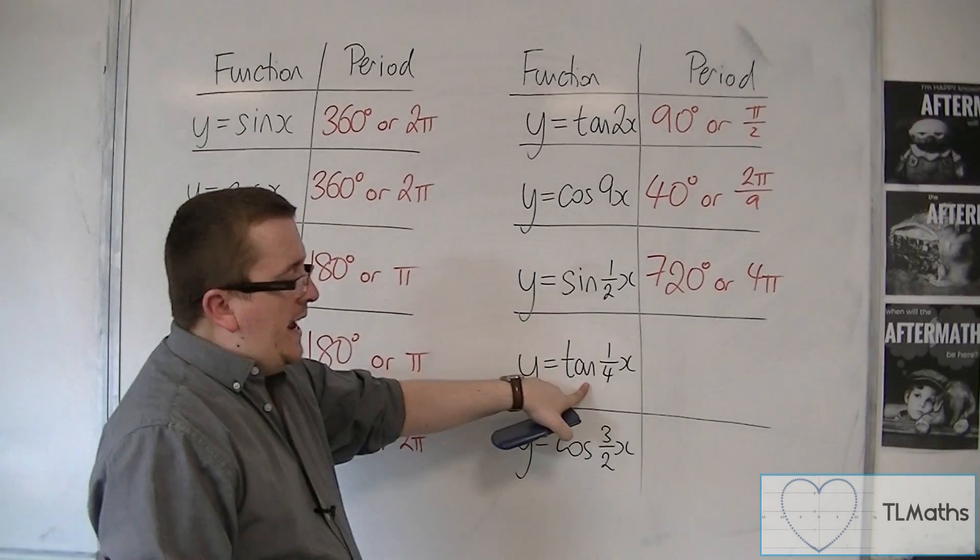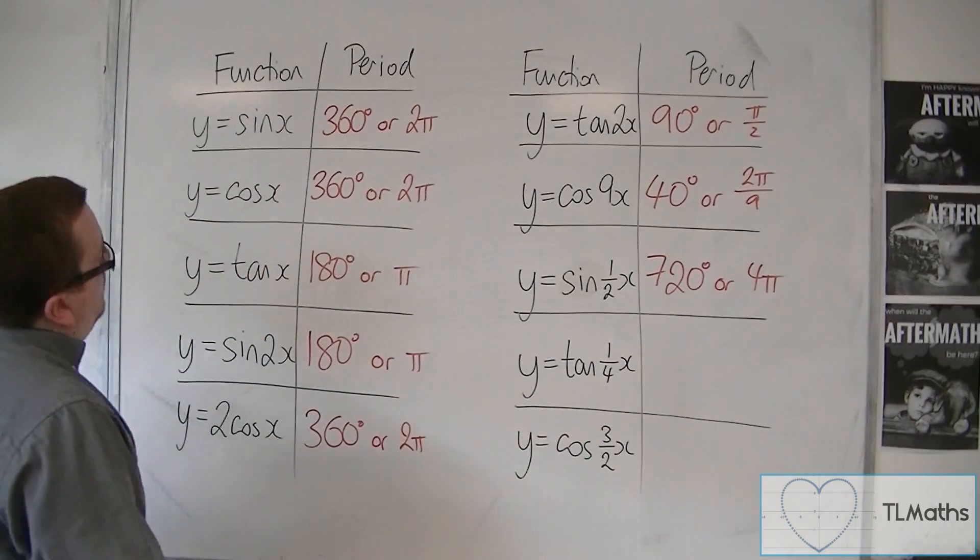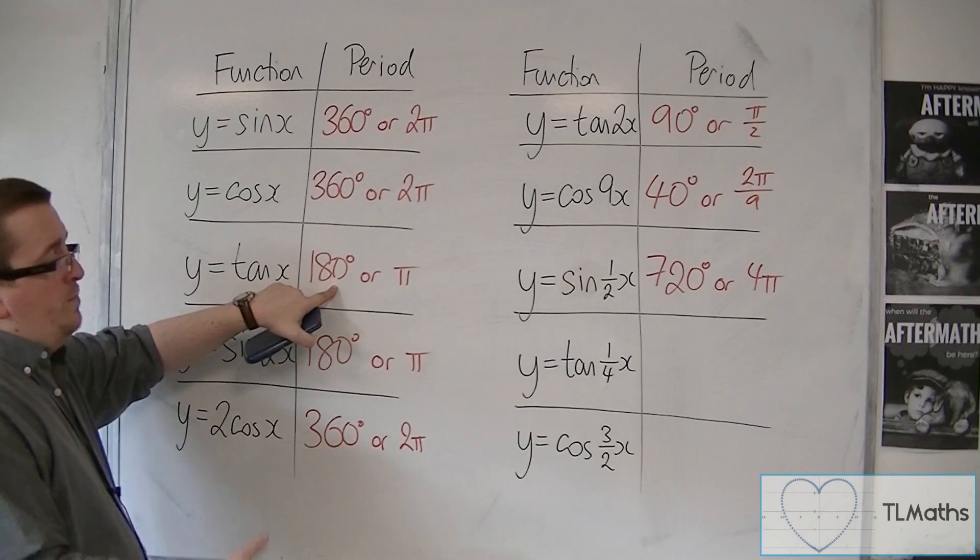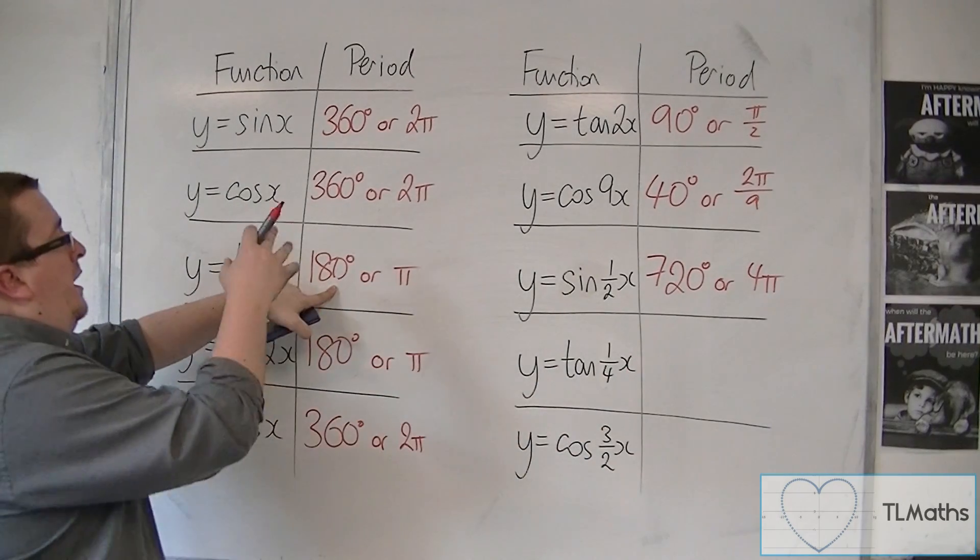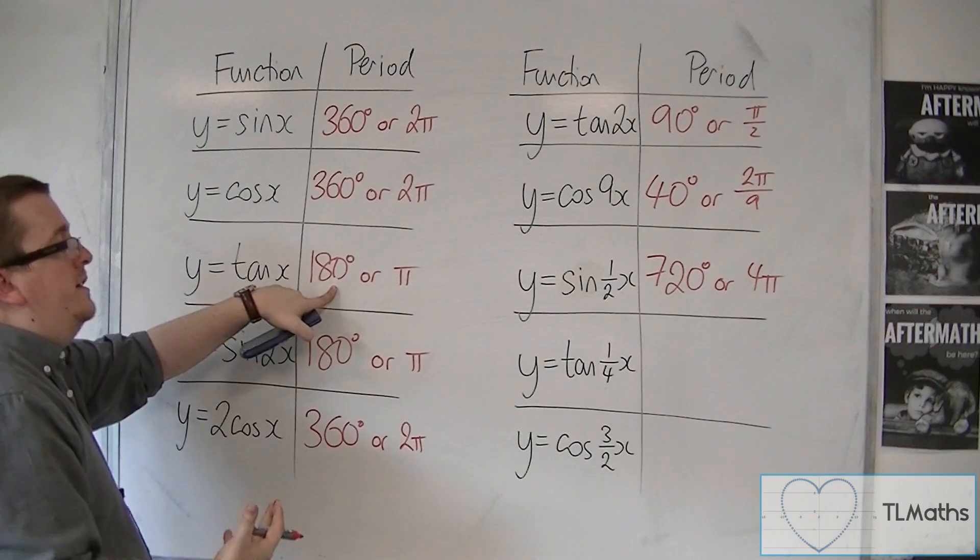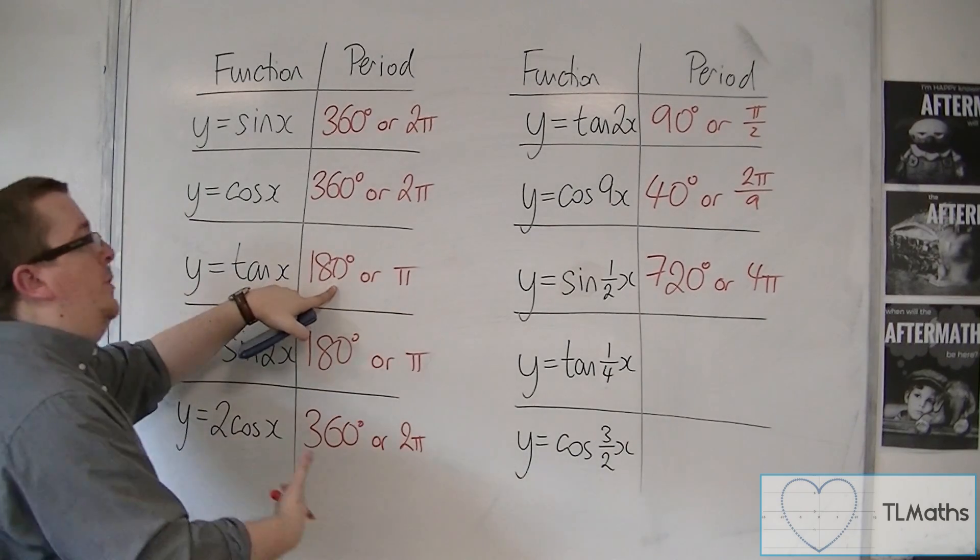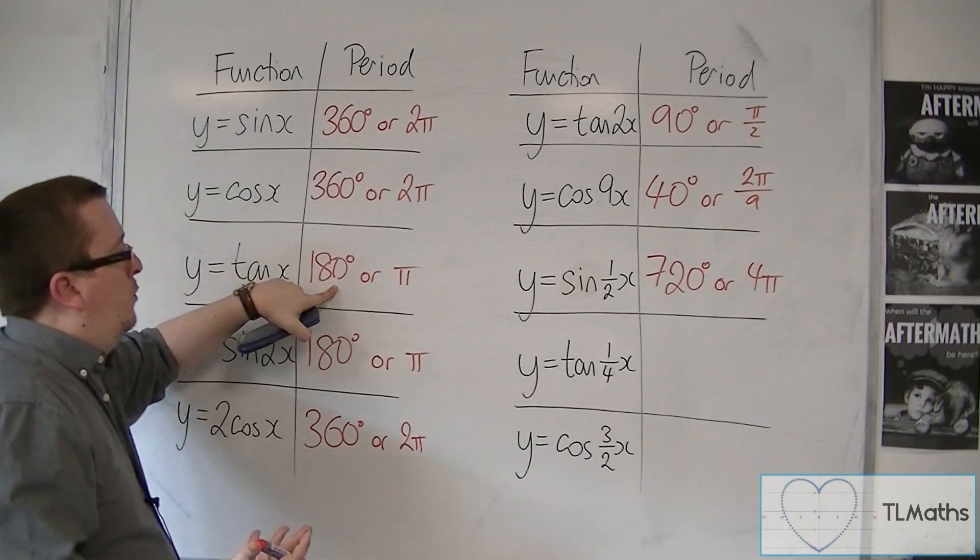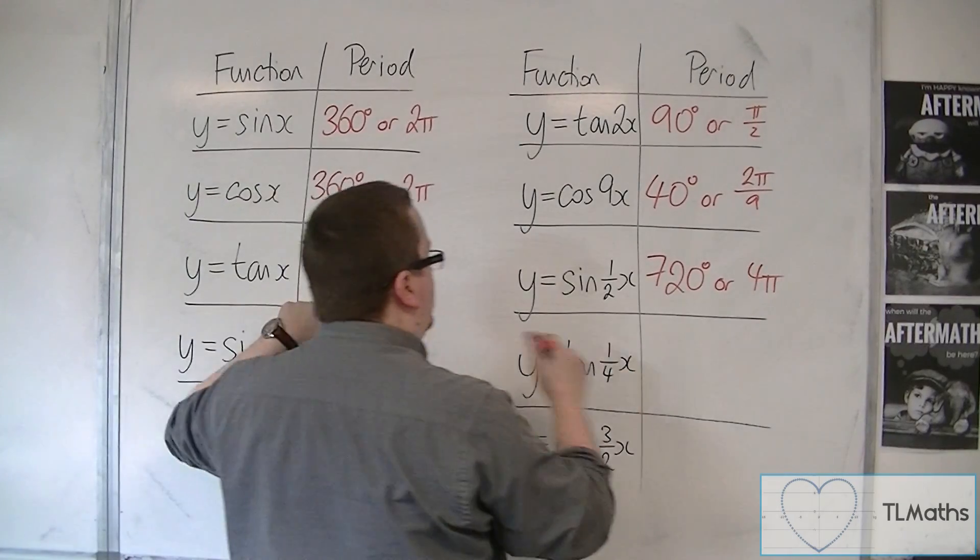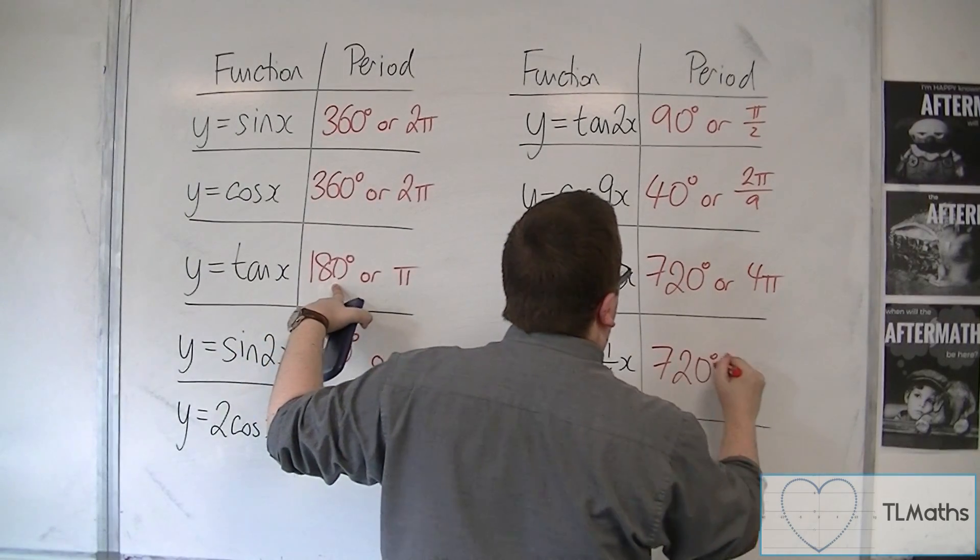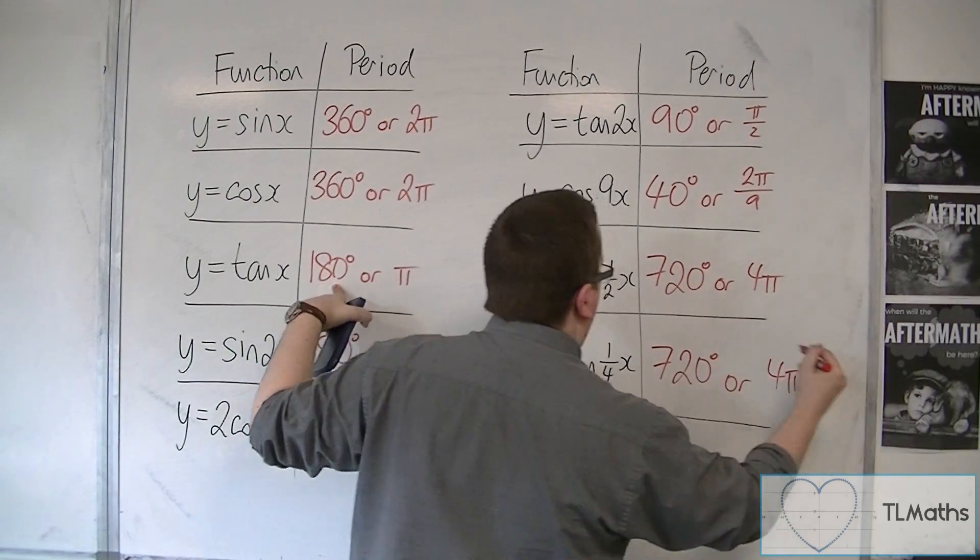Now for tan of a quarter x, that's a stretch parallel to the x-axis factor 4. So we've got 180 divided by a quarter, so we're multiplying by 4. So that's 720 or 4 pi.